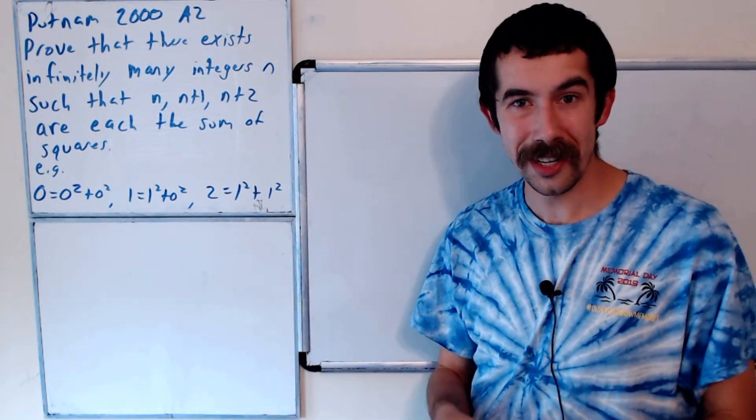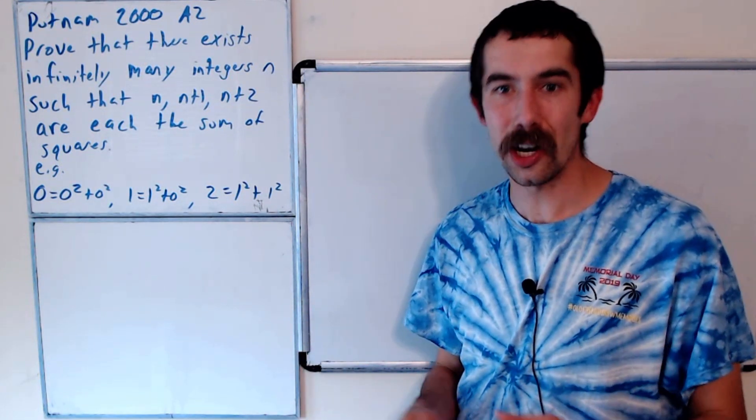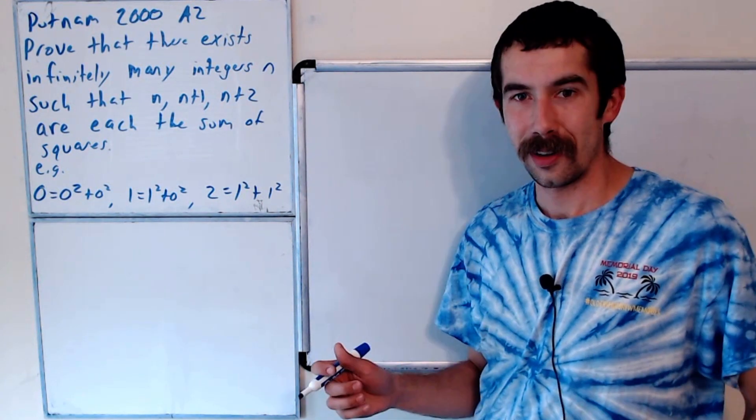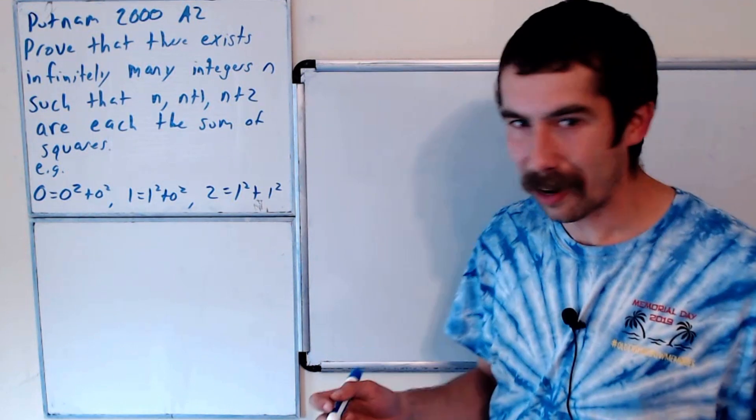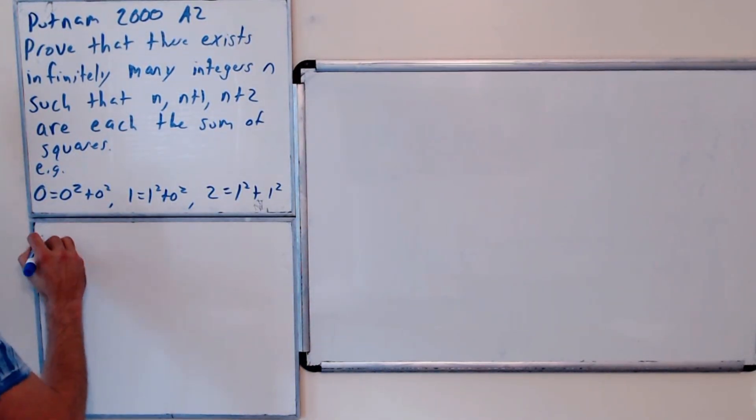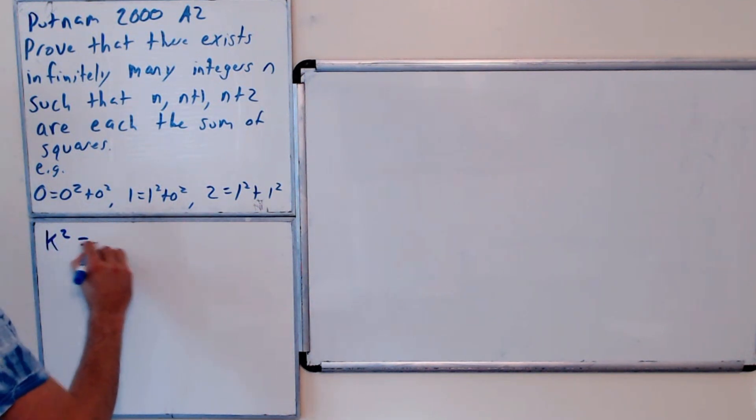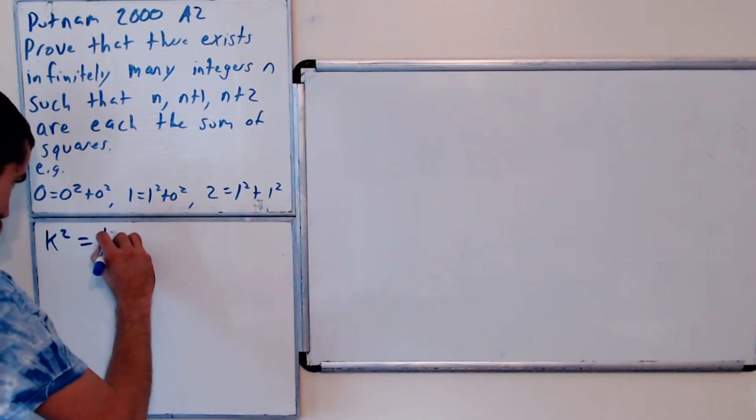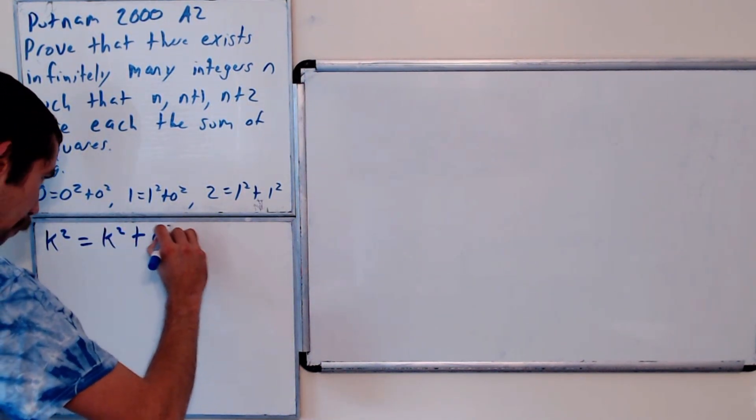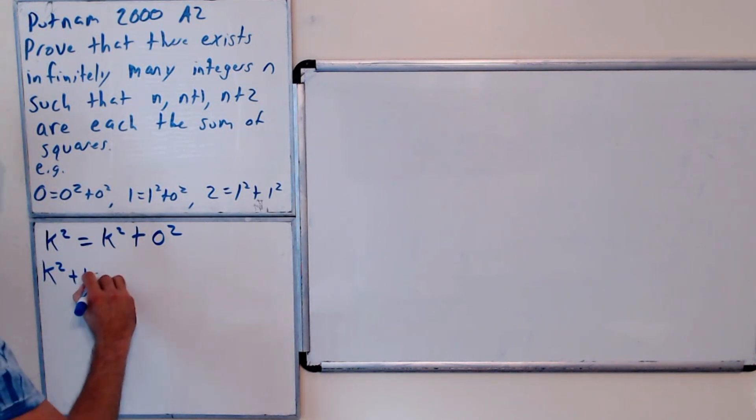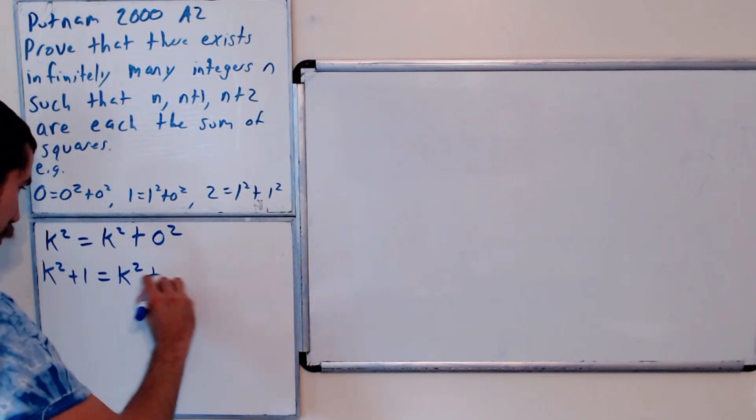So of course, try it on your own first, and let me know in the comments if you're able to solve it, or you can just watch me solve it. One thing to note is that if we have a perfect square, let's call it k squared. Well, k squared is equal to k squared plus 0 squared.